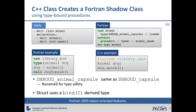C++ classes create a shadow class that contains that same capsule. In the YAML file you just declare a class and tell it that the declarations are inside it — here's the constructor and a method. It creates a type-bound procedure, and from Fortran you can call it as you would expect, as a type-bound procedure, very similar to the way you'd call it from C++.